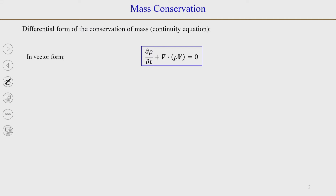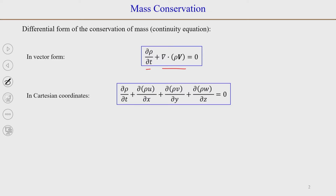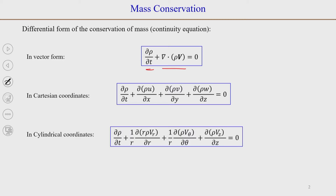The mass conservation equation in vector form is del rho by del t plus del dot rho v equals 0, which is the general continuity equation. In Cartesian coordinates, the second term expands to dou/dou x of rho u plus dou/dou y of rho v plus dou/dou z of rho w. In cylindrical coordinates, the expanded form is dou/dou t of rho plus 1/r dou/dou r of r rho v_r plus 1/r dou/dou theta of rho v_theta plus dou/dou z of rho v_z.